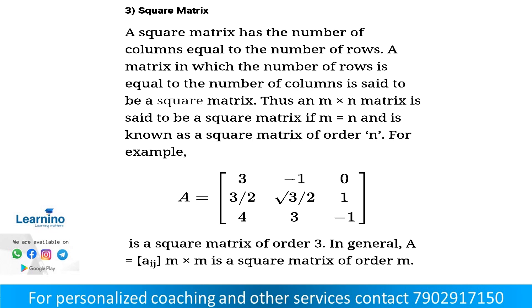A square matrix in which the number of rows is equal to the number of columns is said to be a square matrix, called a matrix of order n. For example, a matrix with three rows and three columns is a 3 by 3 square matrix.